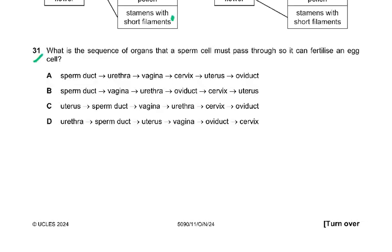Question number 31: What is the sequence of organs that a sperm cell must pass through to fertilize an egg cell? The sperm is deposited in the vagina of the female — so vagina, then cervix, then uterus, and oviduct. The testes produce sperm which goes into the sperm duct, then enters the urethra, and is then deposited in the vagina, cervix, uterus, and oviduct.